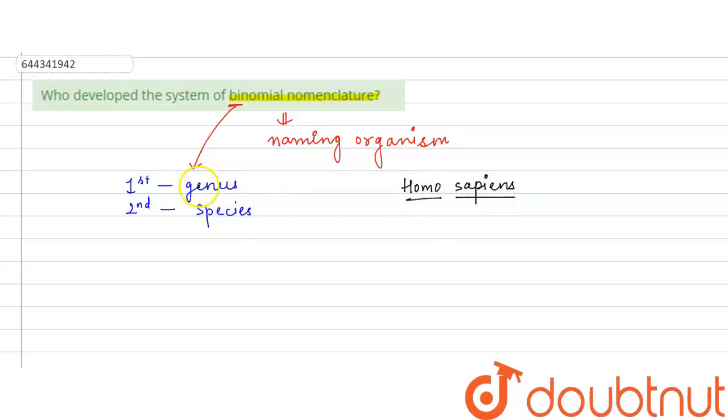So Homo here represents the genus name and sapiens here represent the species name. And who developed this concept? This concept was developed by Carolus Linnaeus.